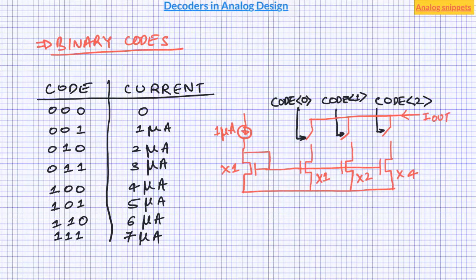Notice that in this scheme we don't need explicit decoders. So when all codes are 0 all switches are off and there is no current. At code 1 only x1 switch is on, and code 2 only x2 switch is on. And code 3 both x1 and x2 switches are on, giving us total current of 3 microampere and so on.